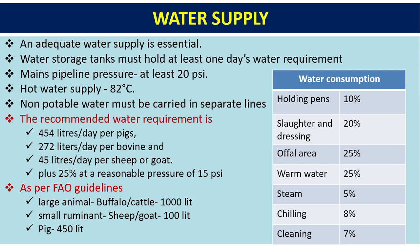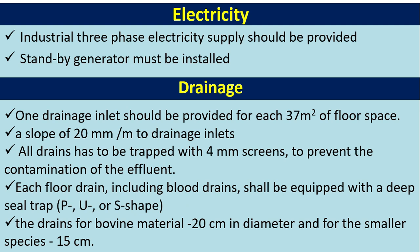As per FAO guidelines, large animals like buffalo and cattle require 1,000 litres of water, while small ruminants like sheep and goat require 100 litres, and pigs require 450 litres of water. Industrial three-phase electricity supply should be provided, and a standby generator must be installed.